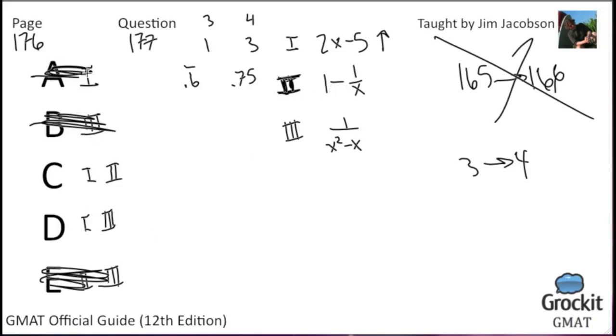The larger that x gets, the less we're subtracting from 1, so choice two definitely goes up. That allows us to eliminate answer choices A and D. Let's talk about why statement three is wrong. With statement three, we're subtracting a fraction that's getting smaller as x gets bigger from 1 in statement two, so we're left with more. But with statement three, all we're left with is a fraction where the denominator just gets bigger.